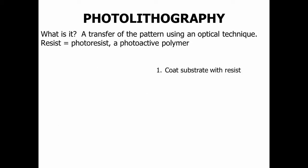So what is photolithography? The 'photo' part means light, and it involves a chemical called a photoresist. The chemical itself is a photoactive polymer — a long chain that changes when it's exposed to light. It hardens. The first steps are to coat your substrate, like a silicon wafer, with the chemical, which is pictured here as pink.